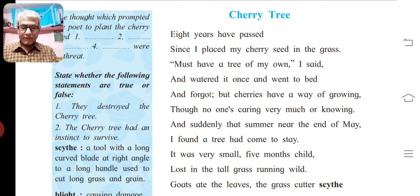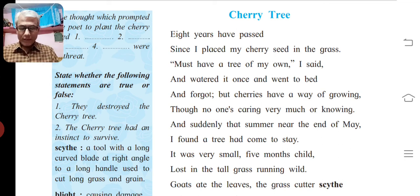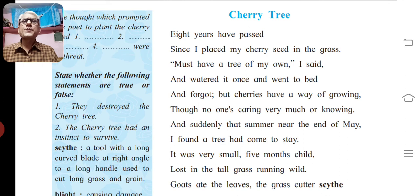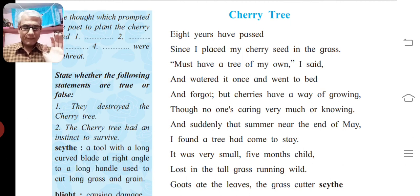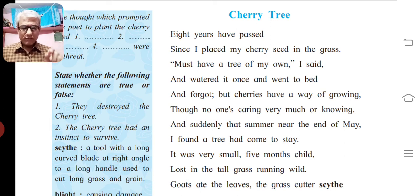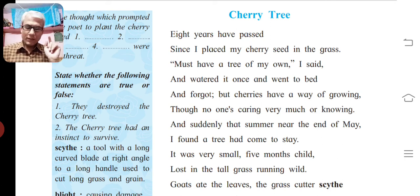Next line: 'I found a tree had come to stay.' In this line the figure of speech used is personification. In personification, non-living or inanimate objects are given human qualities. Here, the cherry tree is given the human quality of coming to stay, so there is personification.